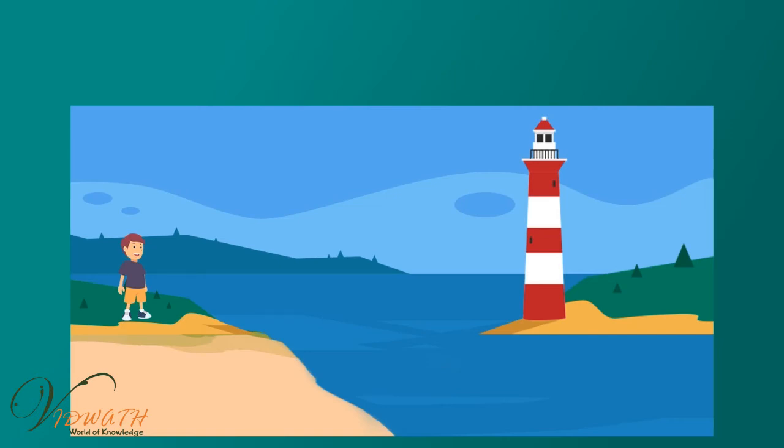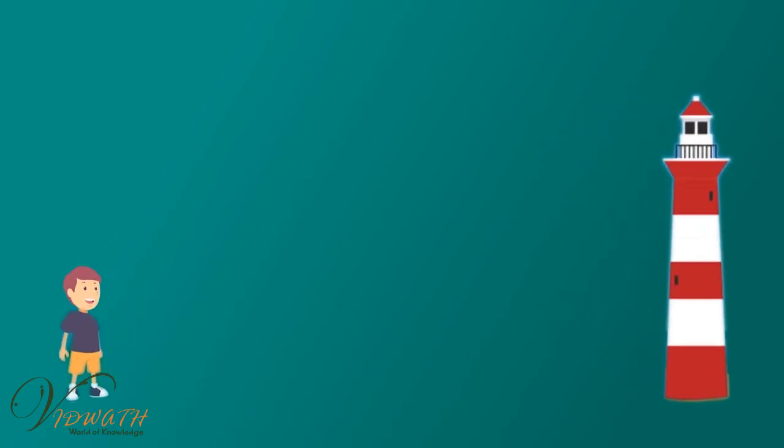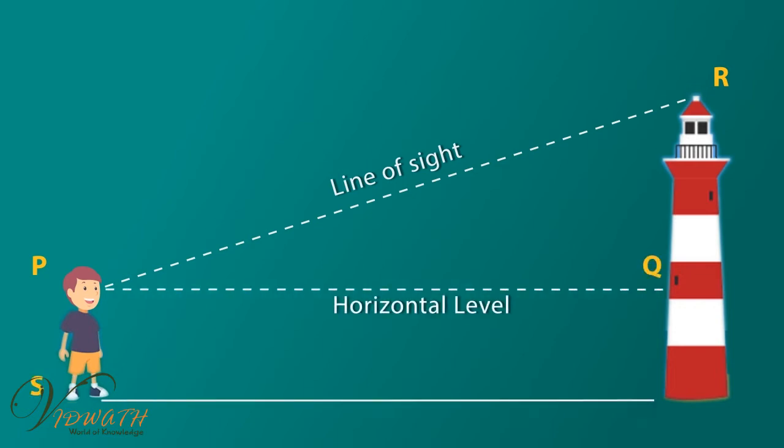In figure 1, a boy is viewing the lighthouse. The lighthouse is above the horizontal line and the boy has raised his head to view the object. In this process, I move through an upward angle formed by the horizontal line and line of sight. This angle is called angle of elevation.